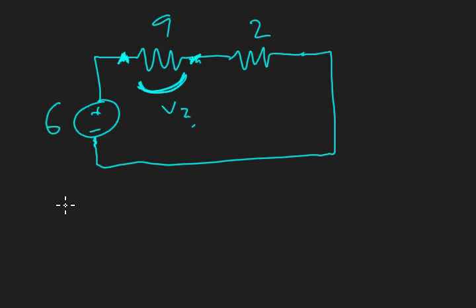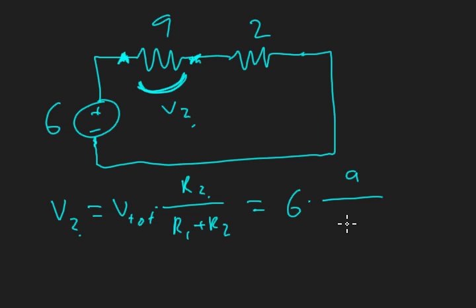Back to our problem, voltage over the questioned resistor equals the total voltage, V_tot, times the resistance in question over R₁ plus R₂. We just substitute the values once again: 6 times 9 over 9 plus 2.